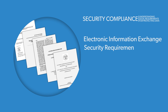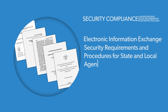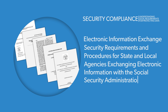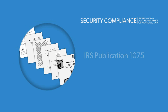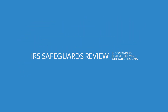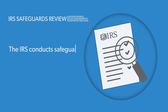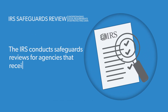Other areas of interest include federal requirements for state and local agencies exchanging electronic information for child support enforcement, a guide for states, the Social Security Administration, and IRS Publication 1075. As a child support agency, you may have access to other federal agencies' information.